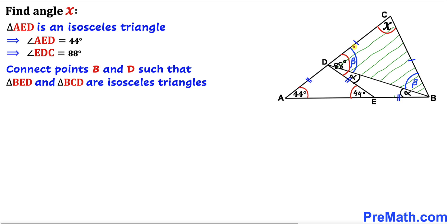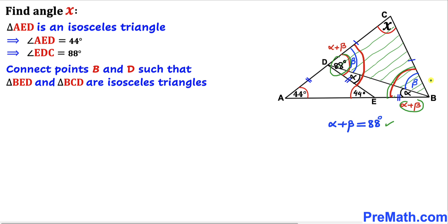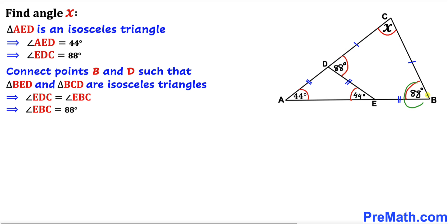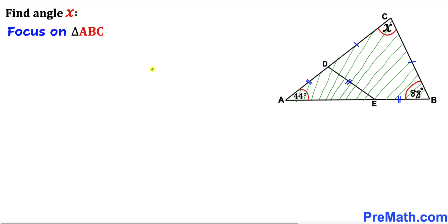We can see that the whole angle from E to C through D is alpha plus beta. Likewise, the whole angle on the other side is alpha plus beta as well. We know that this alpha plus beta angle equals 88 degrees, so therefore this whole alpha plus beta is 88 degrees as well. Therefore angle EBC turns out to be 88 degrees.